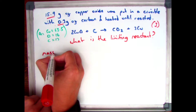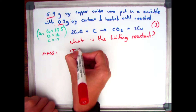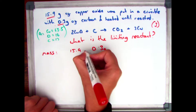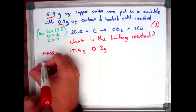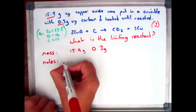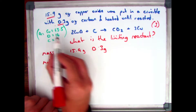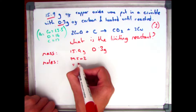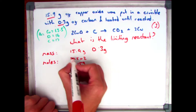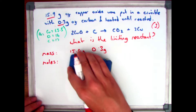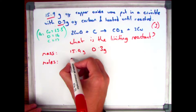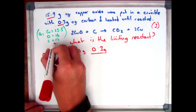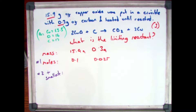Always write in the mass and the MR, then work out the moles from that. We've got 15.9 grams of copper oxide and 0.3 grams of carbon. To work out the molecular mass: 63.5 plus 16 is 79.5, and I've got two lots of them, so the MR for copper oxide is 159. So 15.9 divided by 159 gives me 0.1 moles. Carbon is 0.3 divided by 12, and that gives me 0.025.